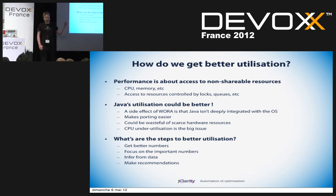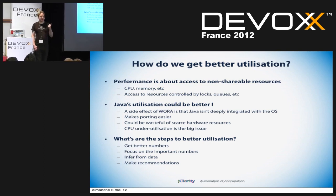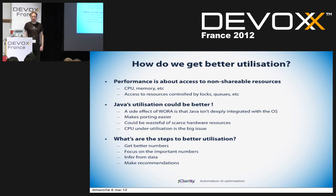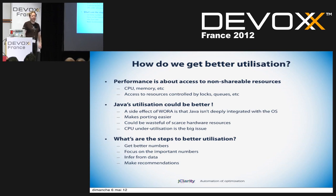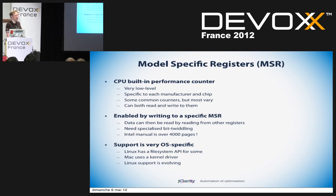But it's okay because we've got a plan. First, get some better numbers. Once you've got the numbers, focus on the important ones — don't try to collect everything. Focus on the important things, infer from the data to detect a trend through statistical analysis, and then make recommendations. Let's take a look at something quite low level: model-specific registers.